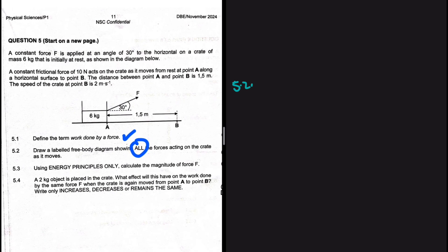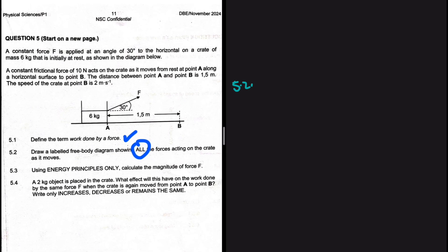Let's go through the question statement and see what is happening. A constant force F is applied at an angle of 30 degrees to the horizontal on a crate of mass 6 kg that is initially at rest as shown in the diagram below. A constant frictional force of 10 newtons acts on the crate as it moves from rest at point A along a horizontal surface to point B. The distance between point A and point B is 1.5 meters. The speed of the crate at point B is 2 meters per second. So we need a free body diagram for the crate.